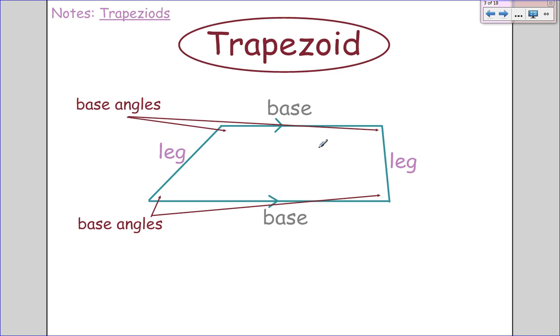Some vocabulary to go along with trapezoids: within a trapezoid we have two bases, which are the parallel sides, and then we have two legs, which are the non-parallel sides.